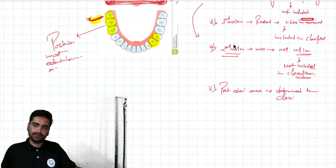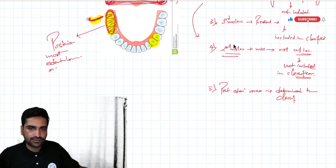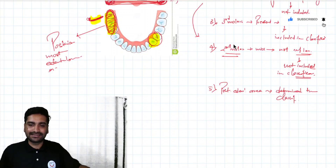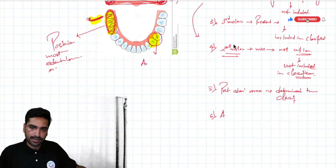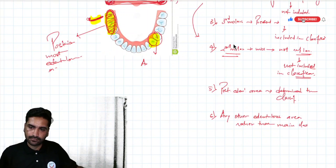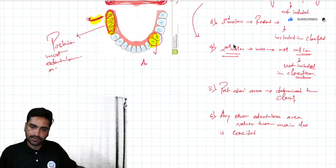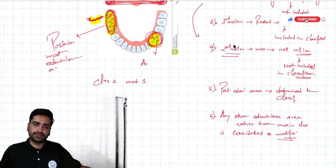Rule number five: the posterior-most edentulous area determines the classification. In this case I will consider the single posterior edentulous area as Class II. Rule number six: any other edentulous area other than the main class is considered a modification space, so it becomes Class II Modification 1.